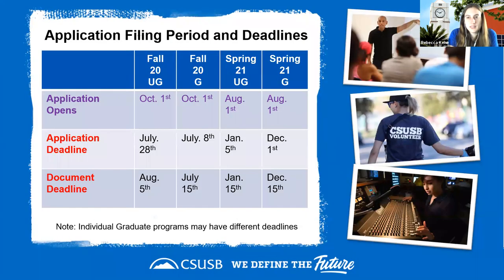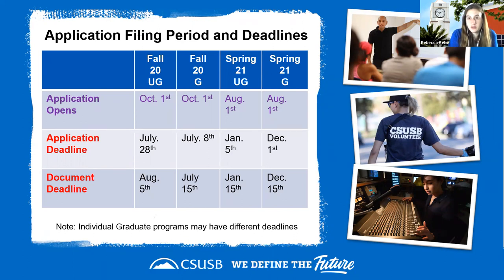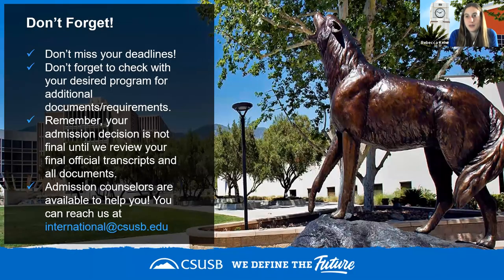For filing periods and deadlines: for fall 2020 we are open until the end of July, and for spring we stay open until early January. Keep an eye on those deadlines. If you have any questions, reach out to our team at international@csusb.edu.